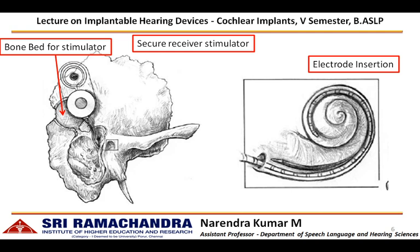With that, the electrode insertion is done. The excess wire can be placed securely in the mastoidectomy region. If required, the surgeon can fill the mastoidectomy region with skin graft or muscle graft and pack it. Once that is done, the soft tissues are sutured together, then the skin is sutured and a bandage is applied. Dressing will be done to facilitate the healing process of the surgical site.